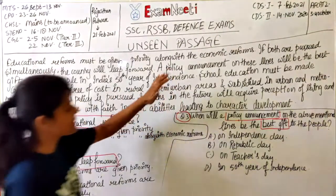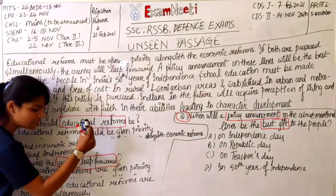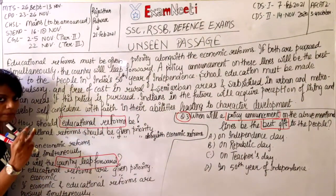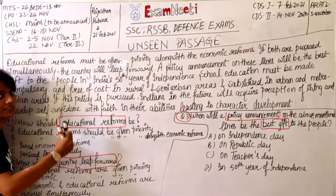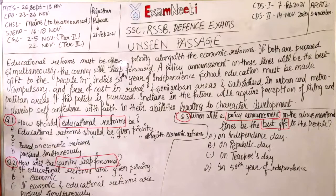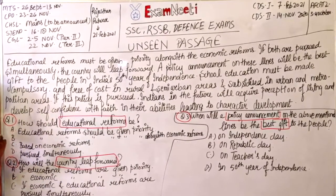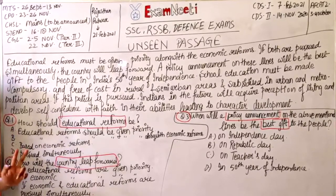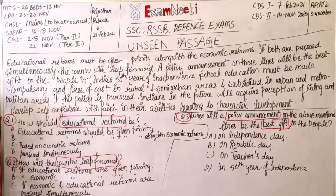Aab pura ka pura passage nahi padhna hai. Ab kya karna hai? Sirf in keywords ko passage mein search karna hai. Third point yeh hai: Now search these keywords in the passage. Toh teen points hain: Number one — read the questions. Number two — mark your keywords. Number three — search the keywords. That is it. Pura passage padhne ka time nahi hai aapke paas.